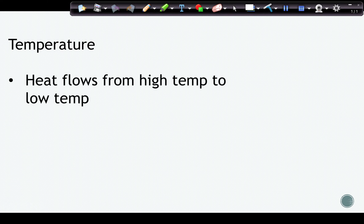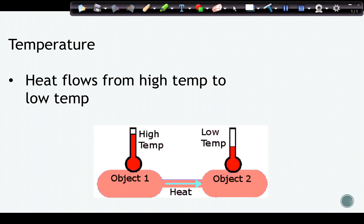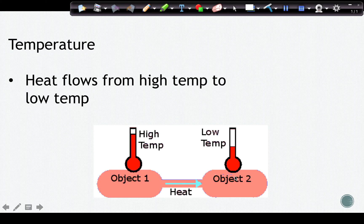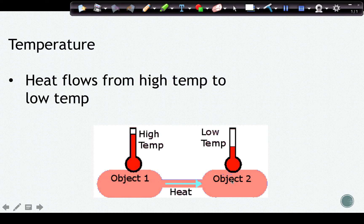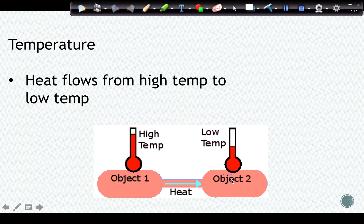When we talk about temperature, again, we know that heat flows from objects or bodies or areas of high temperature to low temperature. So if we had an object at a higher temperature and an object at a lower temperature, heat would always flow from whatever object has higher temperature to whatever object has lower temperature.